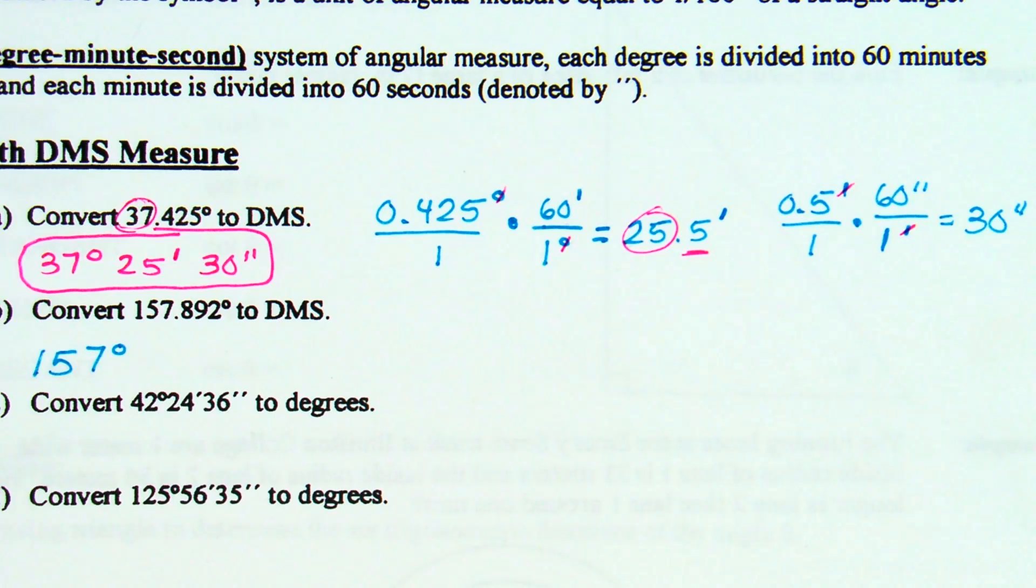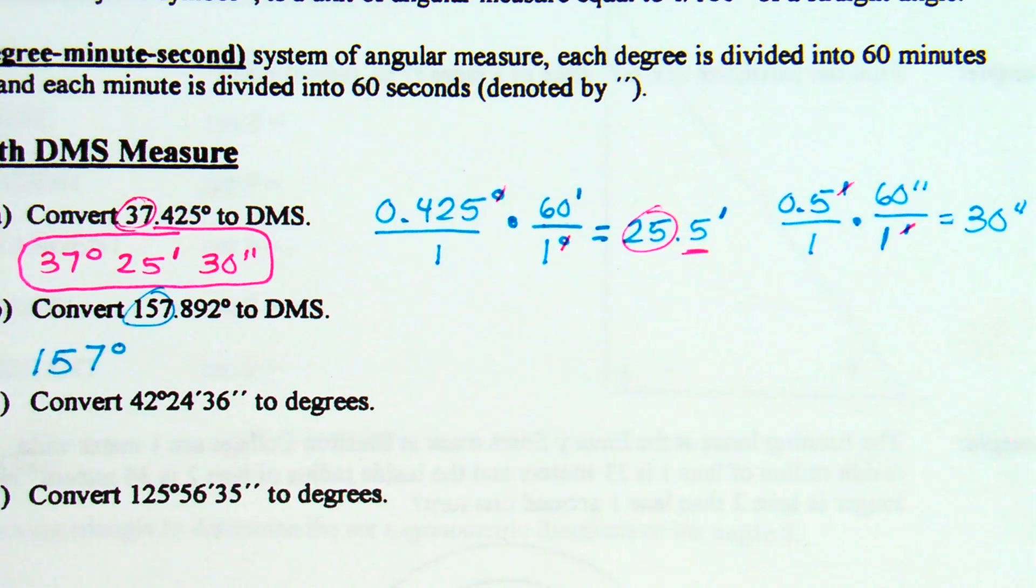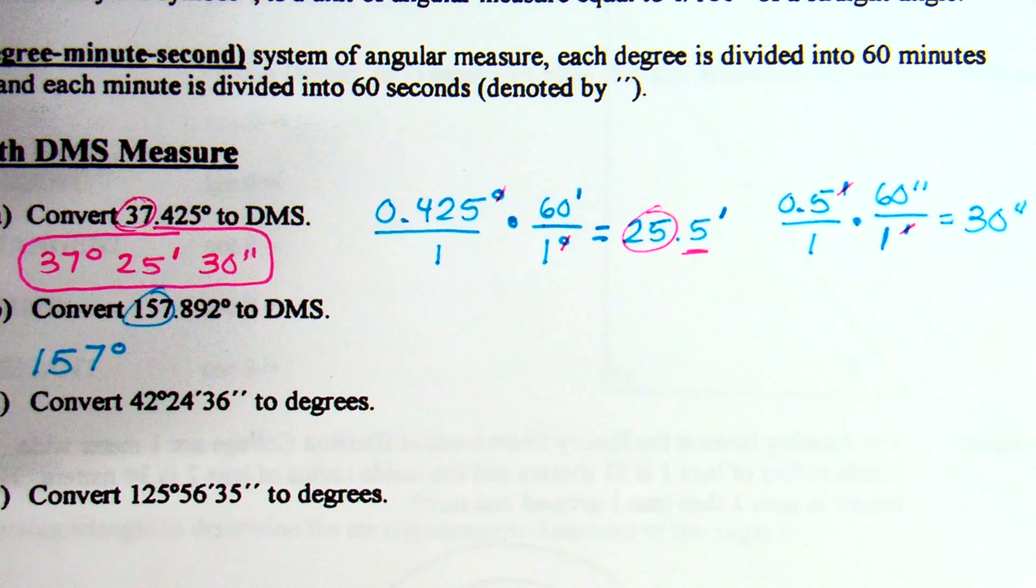It's 157.892 degrees, and we want to convert it to that degree minute second format. So what do you know first? I know already in my answer 157 degrees because of that right there.